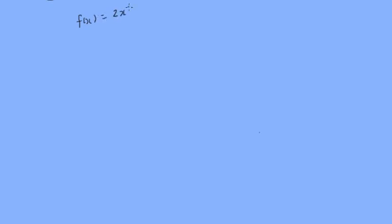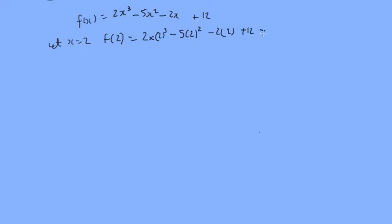So let's consider f of x equal to 2x cubed minus 5x squared minus 2x plus 12. Now let's let x equal to 2. So f of 2 is going to be 2 times 2 cubed minus 5 times 2 squared minus 2 times 2 plus 12, and that gives us 4. So what this tells us is that if f of x is divided by x minus 2, then there is a remainder.